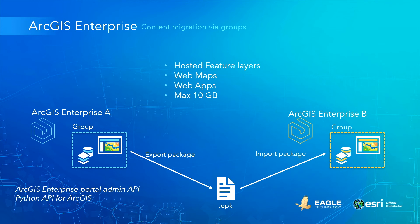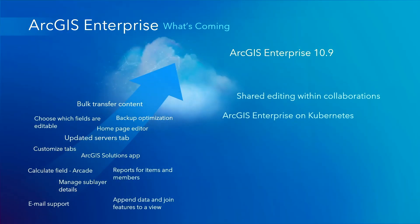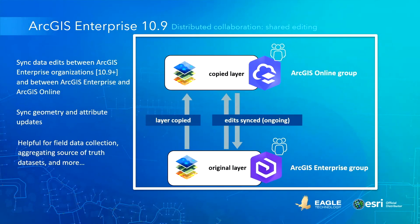Now let's have a look at the key highlights of what's coming in the next release. There will be many new improvements, but there are two key updates to highlight. In the next release, you'll be able to sync data edits both ways in editable layers that are part of a distributed collaboration. This is a much requested enhancement and will improve the way different RGS Enterprise sites and RGS Online can work together, and it will be helpful for many fieldwork and other editing workflows.